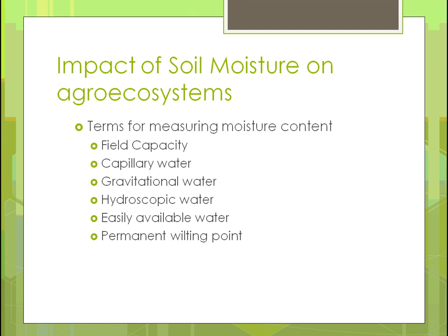Some key terms for measuring moisture content: Field capacity is how much water can be held in a given area. Capillary refers to the ability of water to flow through the soil. Gravitational water is when there's too much water on the surface and gravity pulls it down. Hygroscopic water is easily available water. The permanent wilting point is the moisture level at which a plant has gone without water long enough that it wilts permanently and will never recover.